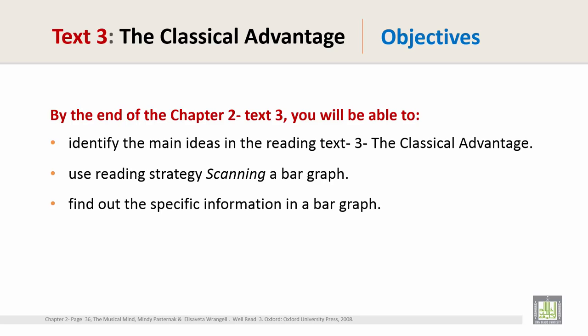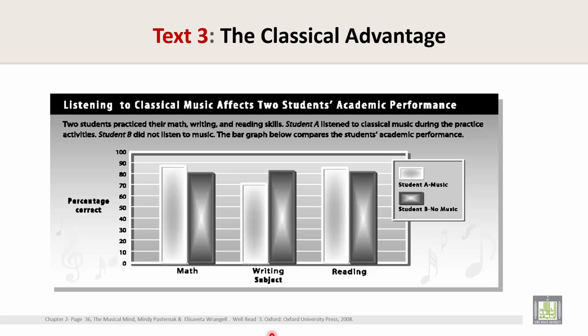Text 3, The Classical Advantage, uses the reading strategy of scanning a bar graph to find out specific information. Here is your bar graph. Read the title: Listening to classical music affects two students' academic performance.